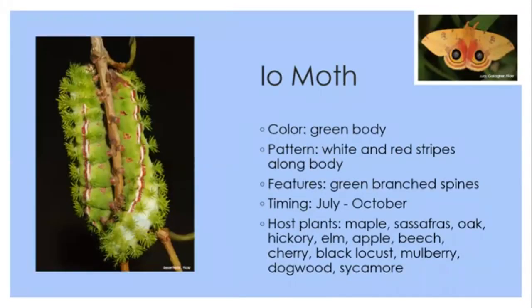The io moth has a green body with white and red stripes and green branched spines. It will be two to three inches when fully grown — remember those spines are irritating to the skin. July through October, you can find them on many different tree species.